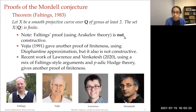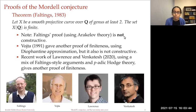There have been a few other proofs over the course of the last few decades. Vojta gave another proof of the Mordell conjecture using Diophantine approximation, but it also doesn't construct the set of rational points. And very recently, work of Brian Lawrence and Akshay Venkatesh extends some of the ideas in Faltings' work and combines it with some p-adic Hodge theory to give another proof of the Mordell conjecture.